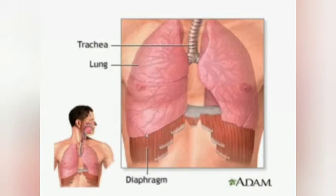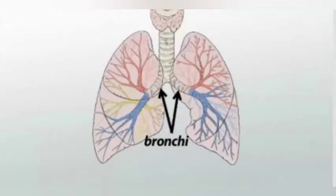Air is supplied to the alveoli by small tubes called bronchioles. The bronchioles come together in two large tubes called the bronchi, one situated on the right and the other on the left. The bronchioles join the trachea, or the windpipe, and it is through the trachea that the air we breathe in passes through the throat into the lungs.